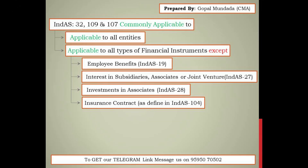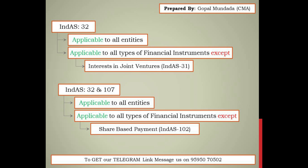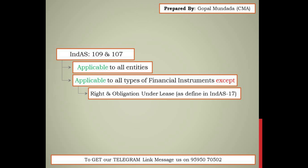On the current slide, there are four Indian AS to which provisions of Ind AS 32, 109, and 107 are not applicable. These are: Ind AS 19 (employee benefits), Ind AS 27 (interest in associates), Ind AS 28 (joint ventures), and Ind AS 104. Additionally, Ind AS 31 is one to which Ind AS 32 will not be applicable. The provisions of Ind AS 32 and 107 are not applicable to Ind AS 102, and the provisions of Ind AS 107 and 109 will not be applicable to Ind AS 17.